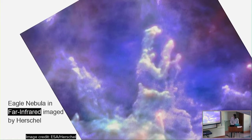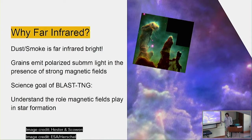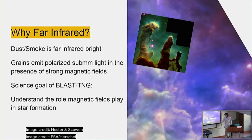You can see that the gas and smoke - the dust - is actually bright in far-infrared. So you can actually measure the properties of the dust and gas, and also the magnetic field direction, which the dust will align orthogonal or parallel to. The light that's emitted from these dust grains will actually become polarized, and that alignment of the polarization will tell you the direction of the magnetic field in that region.